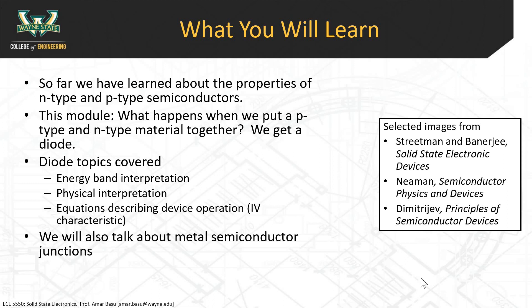We've already learned about the properties of n-type and p-type semiconductors on their own. In this module, we put the two semiconductors next to each other and see what happens. It forms a diode, and we can talk about the energy band model, the physical model, and eventually get into the equations describing diode operation — the IV characteristics. So the exponential diode equation that you know from circuits classes, we're basically going to derive that, starting from solid-state physics.